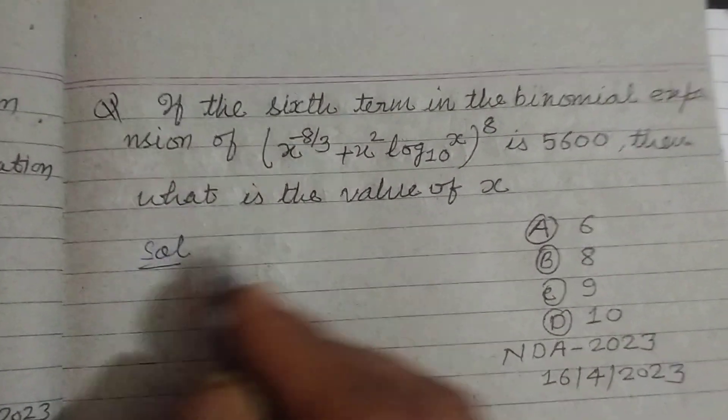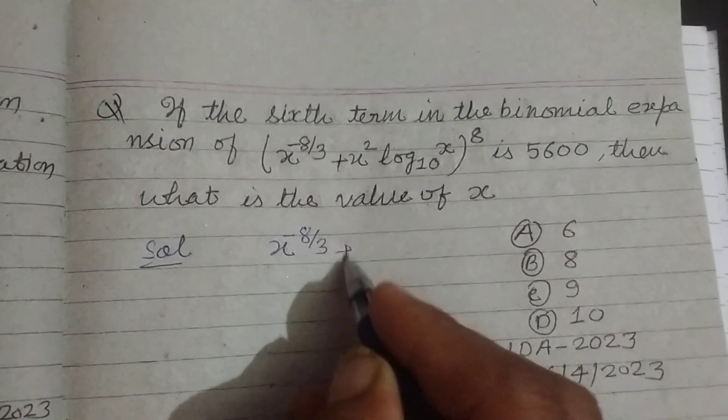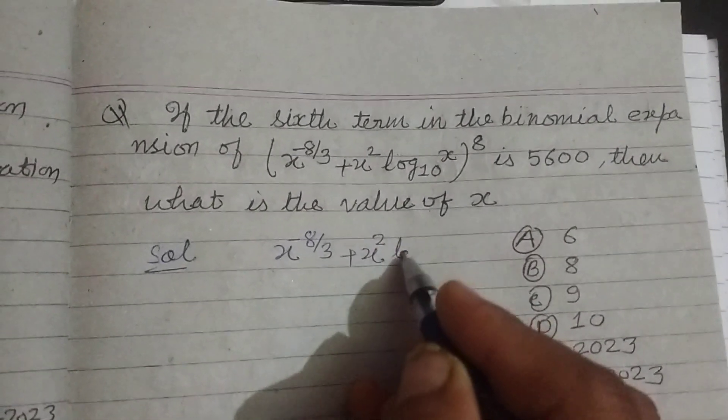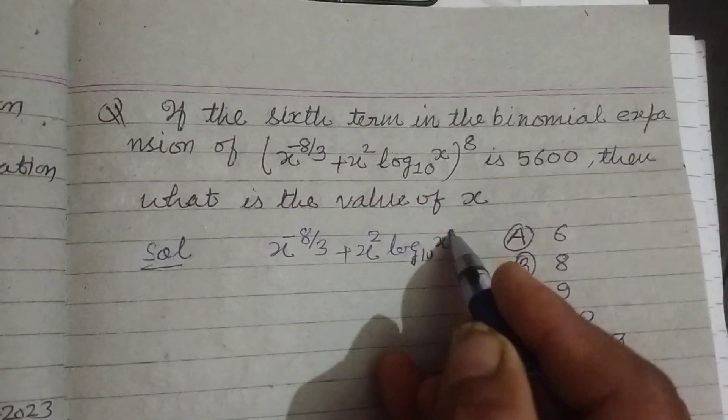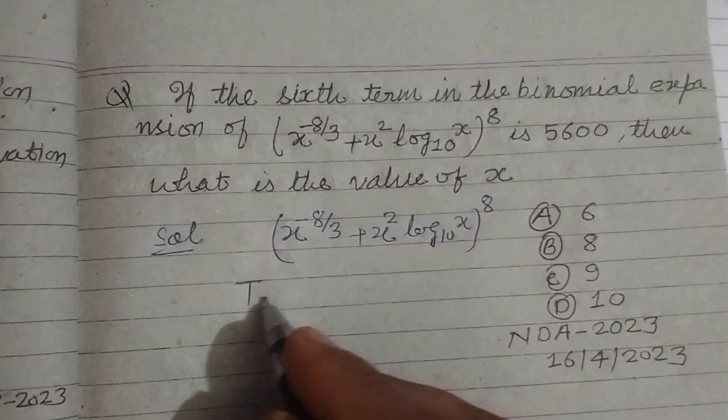So student, here the given binomial expression is (x^(-8/3) + x^2 log₁₀(x))^8. We need to find the sixth term.